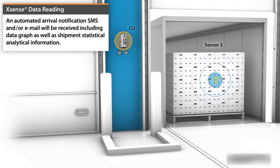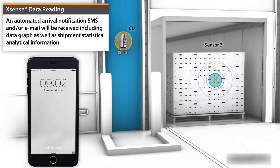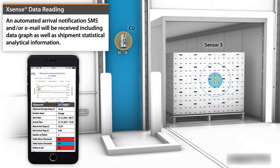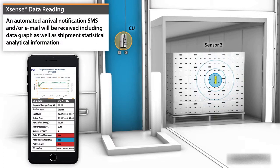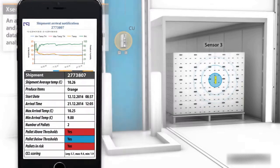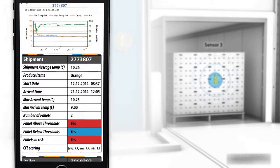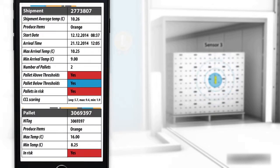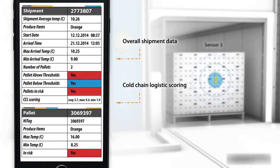An automated arrival notification SMS and email will be received, including a data graph as well as shipment statistical analytical information. Overall shipment information will be provided, as well as cold chain logistics scoring and pallet at-risk information.